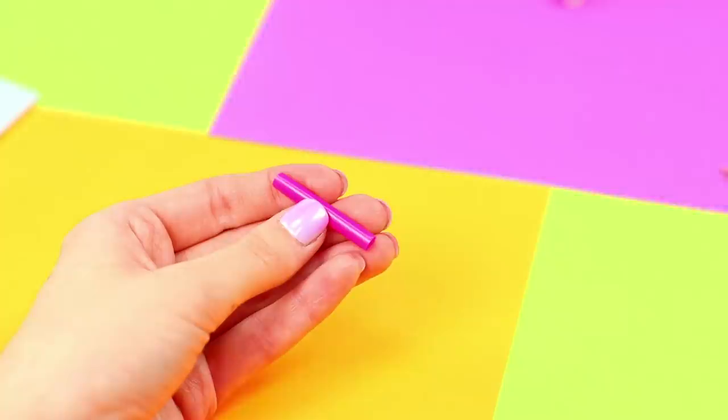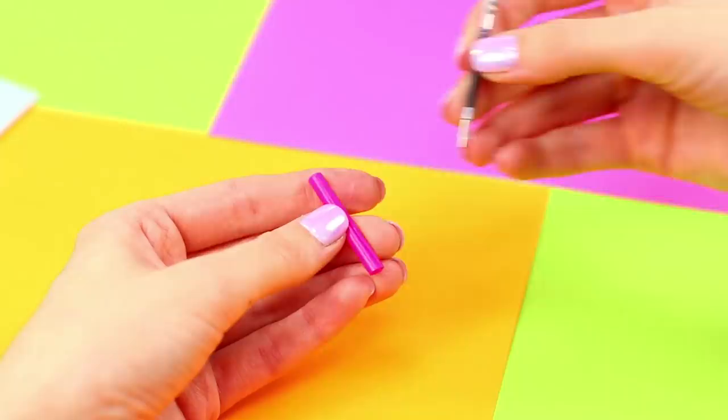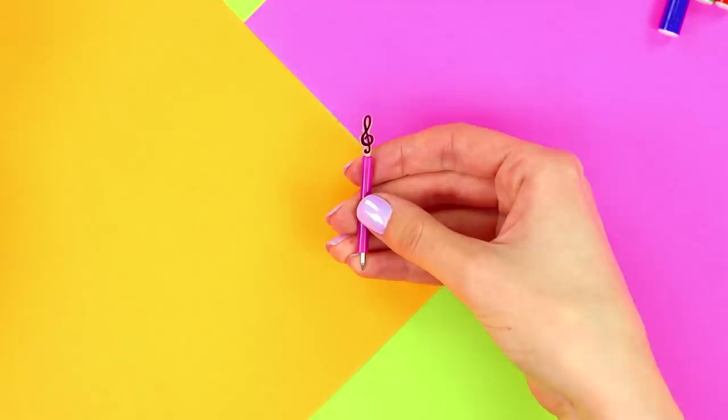Cut a straw to the length of the pen. Cut it lengthwise. Place the pen in the pink case and compress the plastic around it. This composer set will make you the top of your music class!